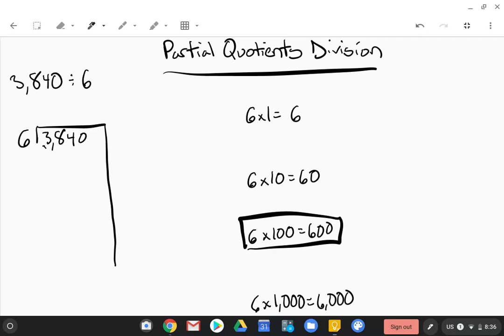So if 6 times 1,000 is about twice as much, let's do half of 6 times 1,000. Let's do 6 times 500. 6 times 500 would be 3,000, and that looks like a good partial quotient to start with. So we do 6 times, it goes into 3,840 500 times. 6 times 500 is 3,000, and so we're gonna subtract that much out, we're left with 840.